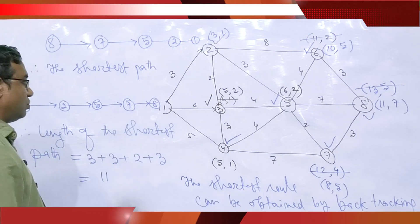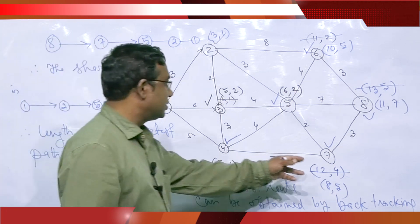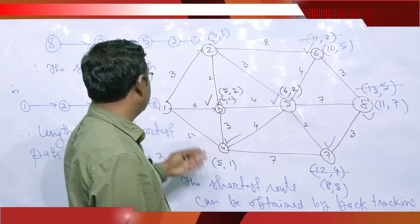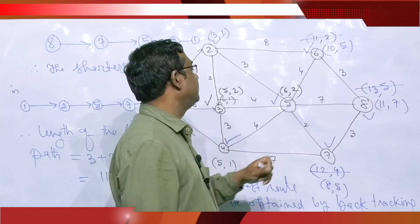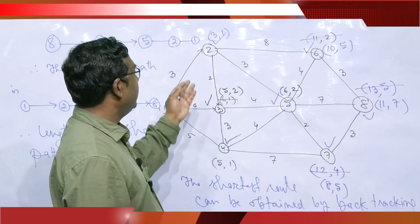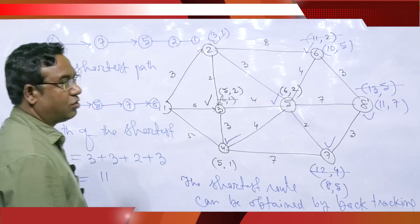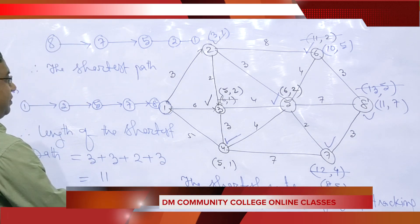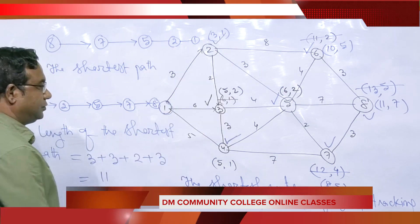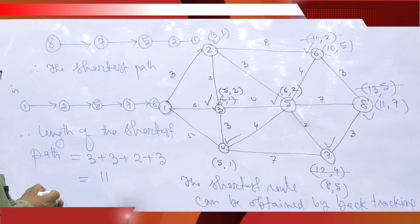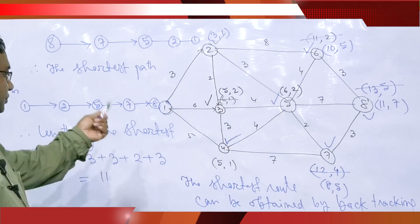In this method we can find out the shortest path for every node. For example, node 7 from node 1: distance is 8. Node 6 from node 1: shortest distance is 10. Node 5 from node 1: shortest distance is 6. So at one time we can see the shortest distance of all the nodes from node 1. This is the advantage of Dijkstra's method — we can find the shortest path of any node from the given source using this algorithm.